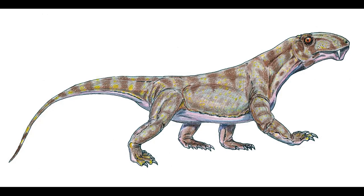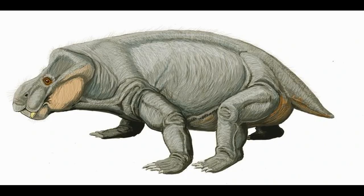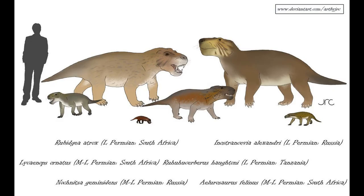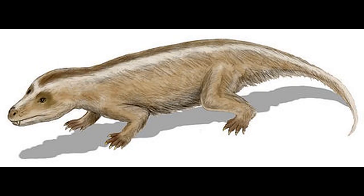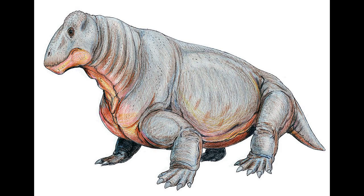There are six clades of therapsids: biarmosuchia, dinocephalia, anomodontia (which includes dicynodonts), gorgonopsia, therocephalia, and cynodontia. Biarmosuchians, gorgonopsians, therocephalians, and some dinocephalians like Anteosaurus were carnivorous, while other dinocephalians like Ulemosaurus and the anomodonts were herbivores.